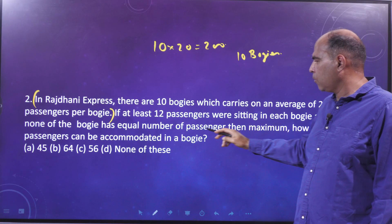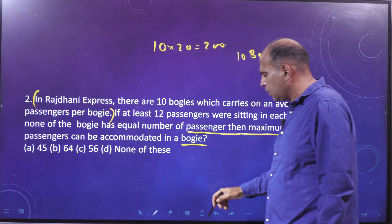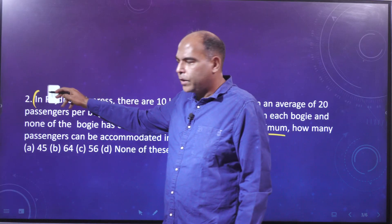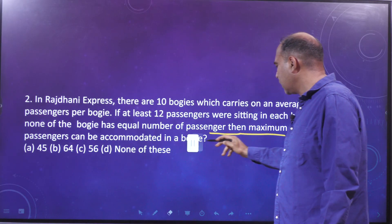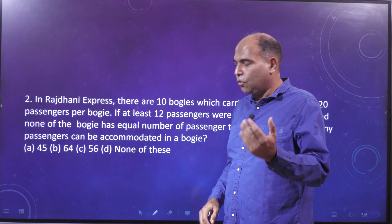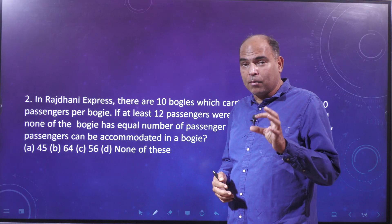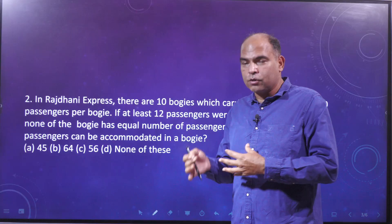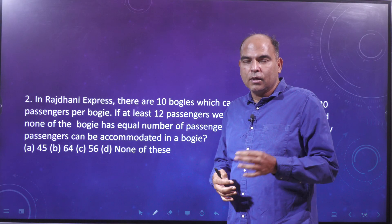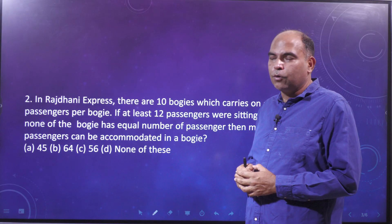If at least 12 passengers are sitting in each bogey and none of the bogeys has an equal number of passengers, then what is the maximum number of passengers that can be in one bogey? These maximization/minimization questions are very common nowadays in aptitude exams — CAT started this trend, but it has spread to IPMAT, UPSC, banking, and all other aptitude exams.